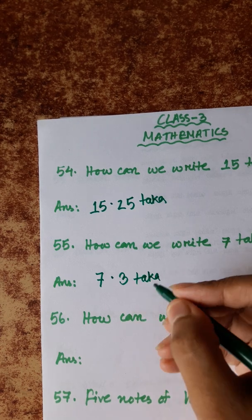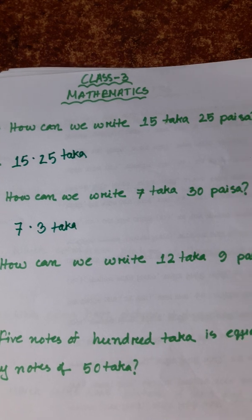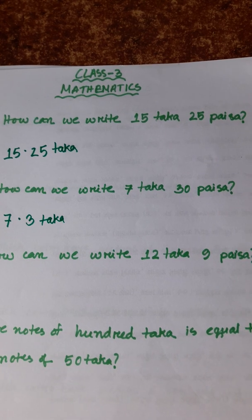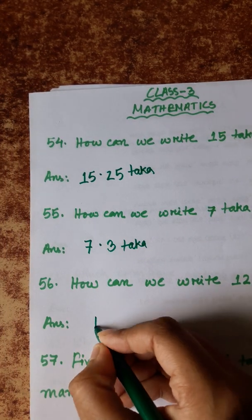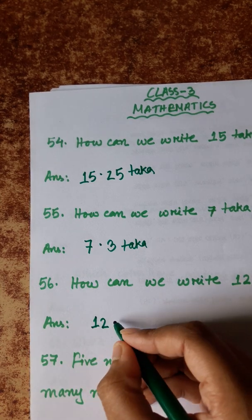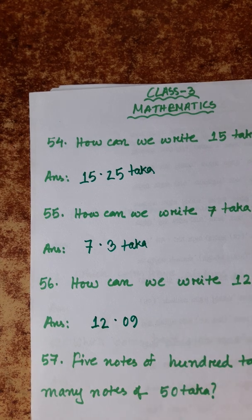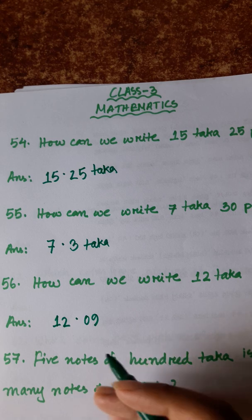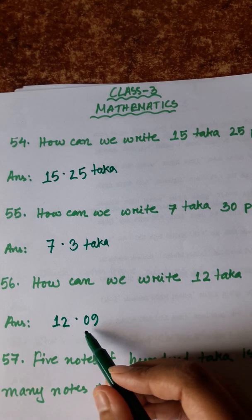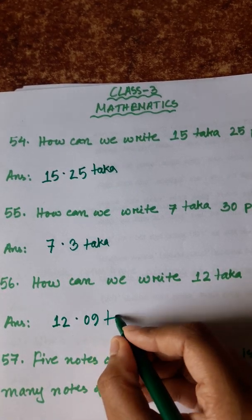Number 56: how can we write 12.09? So, 12.09. If you have a number with 1 and 9, then you can write the decimal part accordingly. The answer is 12.09.